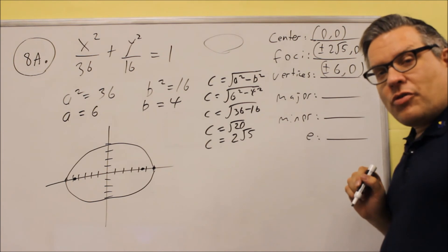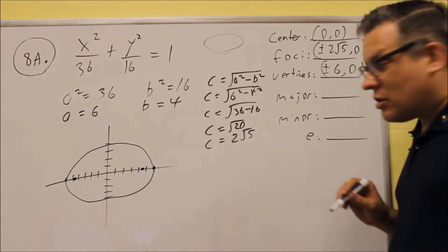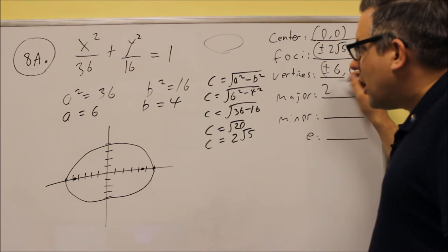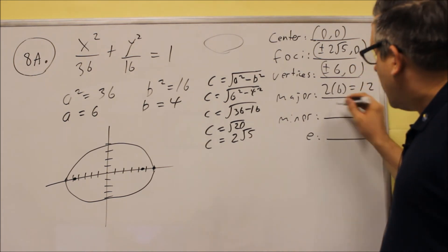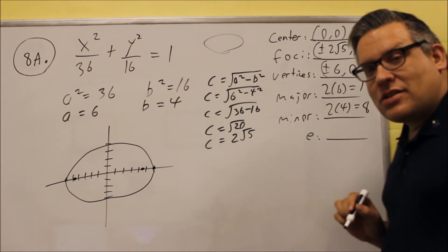The rest of these are just going to be formulas. Length of the major is 2 times A, so 2 times 6 is 12. Length of the minor is 2 times 4, that's 8.